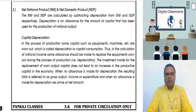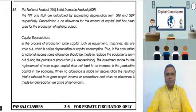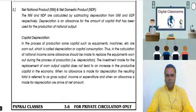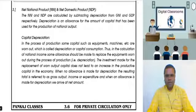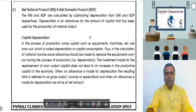This is net national product — NNP. And this is net domestic product — NDP. You will notice that the word 'gross' has been replaced by the word 'net.' The simple difference between gross and net is the allowance for depreciation.